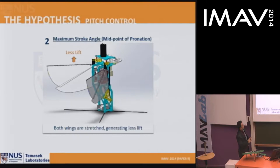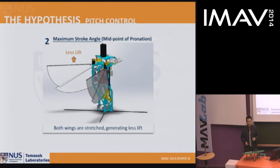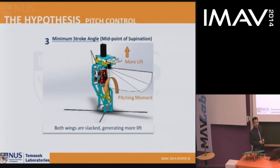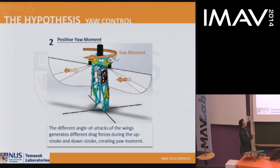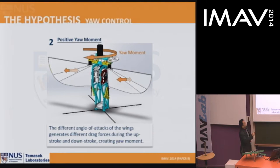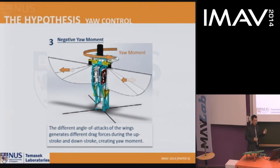When a wing is at the back of the stroke, it is stretched and creates less lift due to discouraged wing rotation. On the other side, the wing is slacked, encouraging more wing rotation and more lift, creating a pitch moment. For yaw, tilting both wings in opposite directions creates an unbalanced differential drag, and the drag generates a yaw moment. Tilting the other way creates yaw moment in the opposite direction.